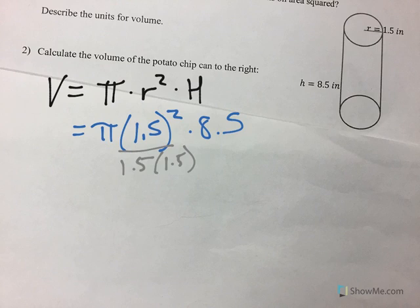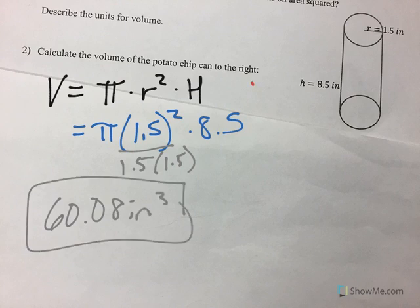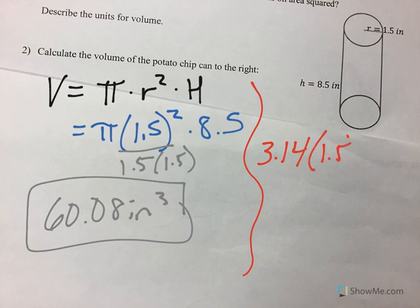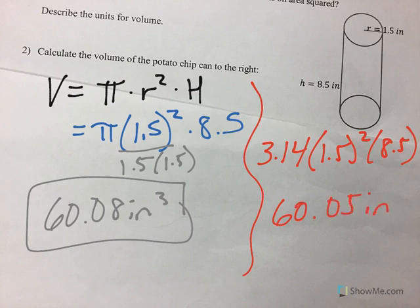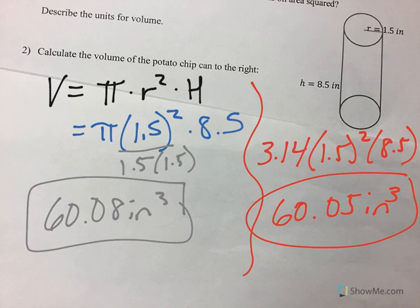So if you use the pi button, you get 60.08 cubic inches. If you would happen to use 3.14 as an approximation for pi, you would end up with 60.05 inches cubed, off by just 3 hundredths, depending on whether you approximate pi or you use the exact button.